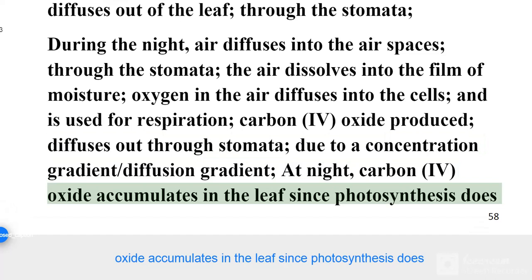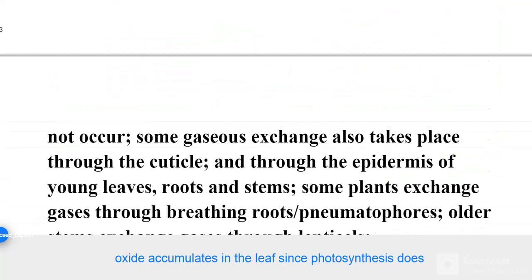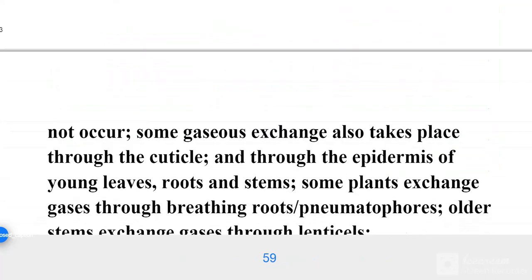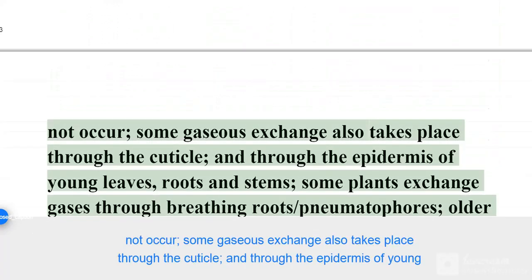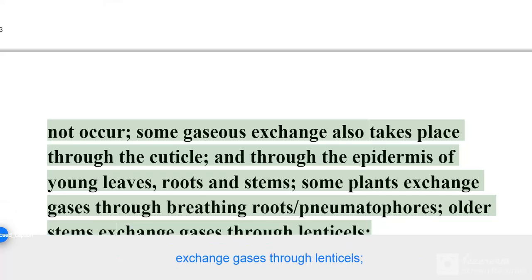At night, carbon dioxide accumulates in the leaf since photosynthesis does not occur. Some gaseous exchange also takes place through the cuticle and through the epidermis of young leaves, roots, and stems. Some plants exchange gases through breathing roots (pneumatophores). Older stems exchange gases through lenticels.